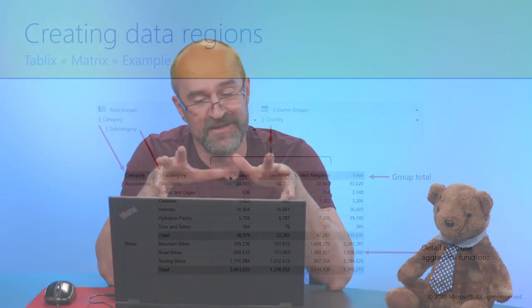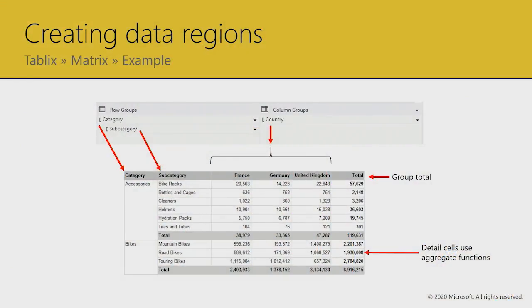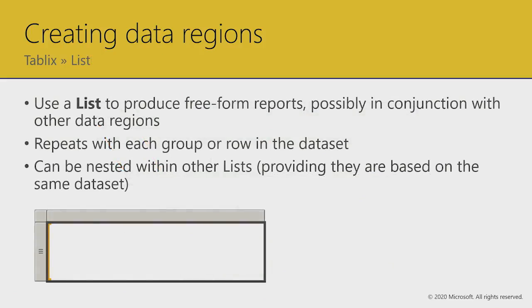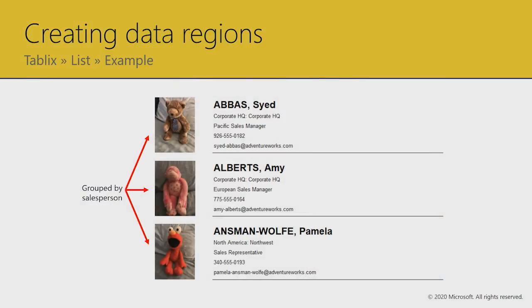Here's an example of what a matrix will look like, including the grouping pane. On the row groups, there are nested groupings from category to subcategory. On the column groupings, just country. At the intersection, values use the sum function to aggregate the cell values. Lastly, the list — its template is very simplistic, just a rectangle, but a rectangle is a container, so you can place whatever controls you like inside, even nesting other rectangles to achieve grouping. We're ready to see a demonstration of the tablix flexing its muscles — stay tuned for the next video.